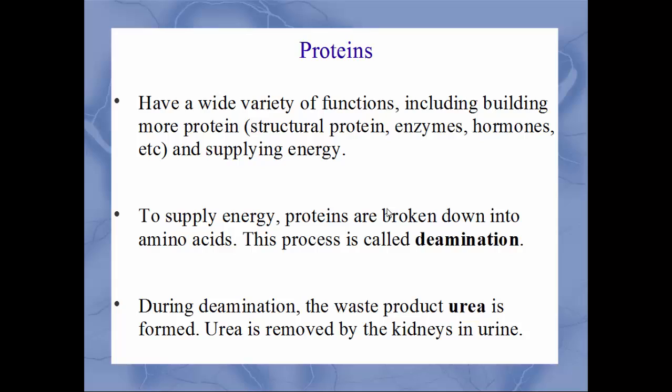Next we'll talk about proteins. Proteins serve a large number of functions, including building more protein, enzymes, hormones, supplying energy, and many more. To supply energy, proteins are broken down into their individual components — amino acids. When you break down a protein, this process is called deamination. During deamination you produce a waste product called urea, which is removed by the kidneys and ends up in your urine.